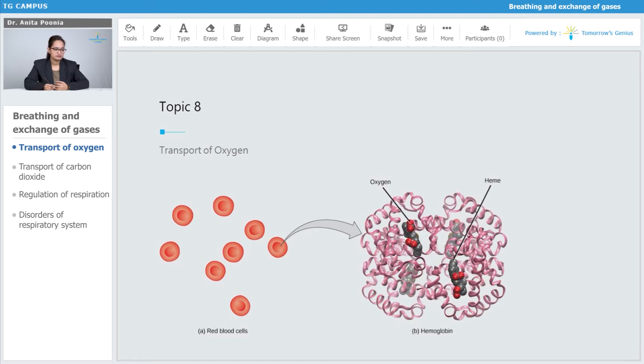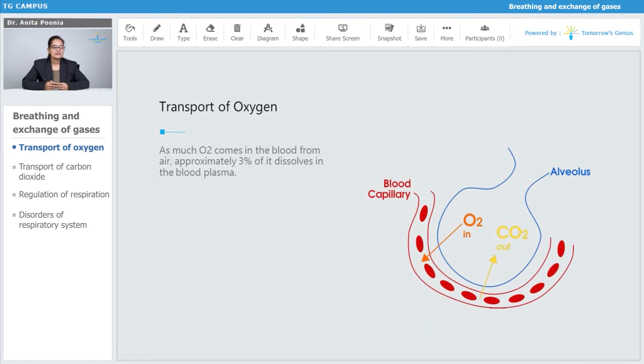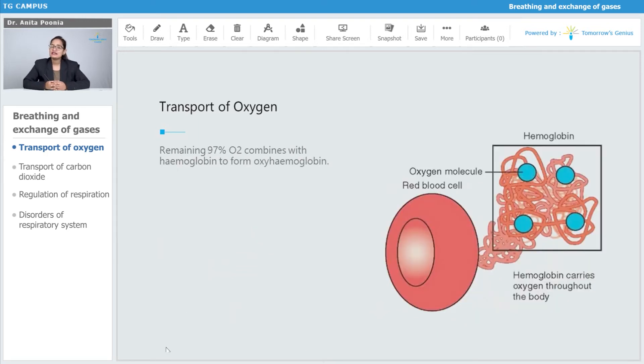As oxygen comes into the blood from air, approximately 3% of it dissolves in the blood plasma. The remaining 97% of the oxygen combines with the hemoglobin to form oxyhemoglobin. As you can see, this is the oxygen molecule, the red blood cell over here, and this is the hemoglobin molecule.